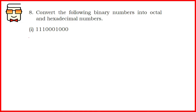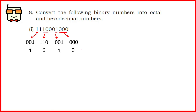Starting with the first part, we create groups of 3. If one or more digits remain on the leftmost side, we add zeros to it. As you can see, we have created 4 groups and added two zeros to the leftmost group. Converting each binary group to its corresponding octal digit gives us 0, 1, 6, and 1. Combining them, the final answer in the octal number system is 1610.